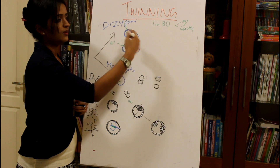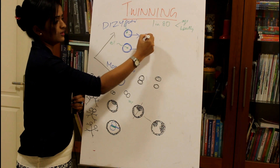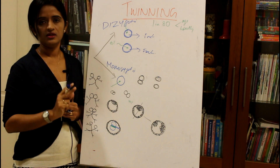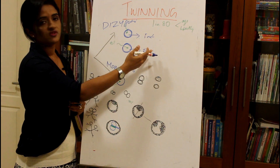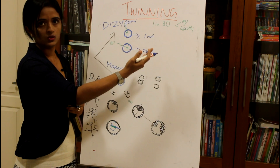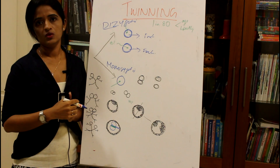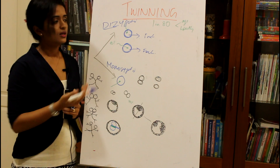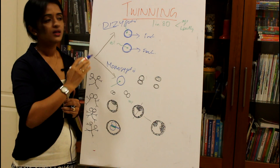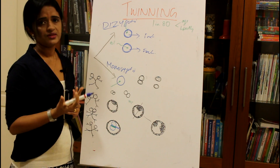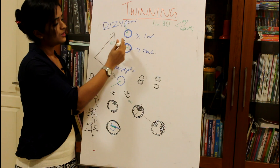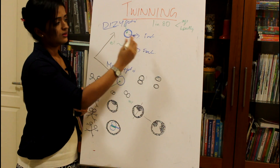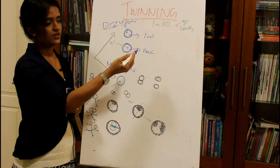Two oocytes fertilized by two sperms results in two zygotes, which develop into two fetuses. Since two fetuses develop from two separate zygotes, this is called dizygotic twins. This is just like siblings — the only difference is the event happens in a single intrauterine period, whereas siblings develop in separate pregnancies.